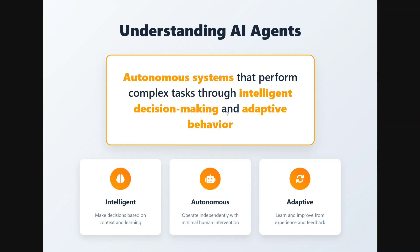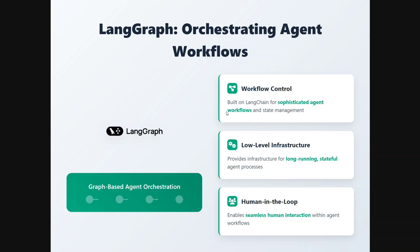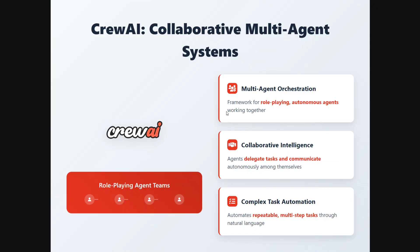Understanding AI agents. AI agents are completely different from MCP. MCP is a protocol, while AI agents are autonomous systems that can execute tasks. They use MCP for tool integration, but they are the ones executing and completing the task — intelligent, autonomous, and adaptive. Examples of AI agent frameworks include LangGraph, which comes from LangChain and supports workflow control, low-level infrastructure, and human-in-the-loop. We also have CrewAI — these are two popular frameworks for creating multi-agent orchestration systems where multiple agents talk to each other.